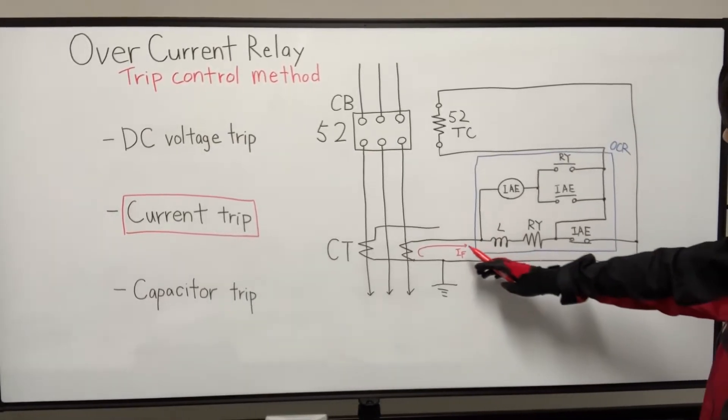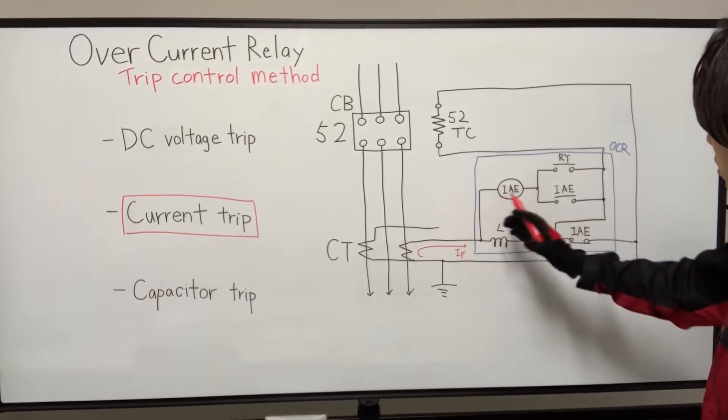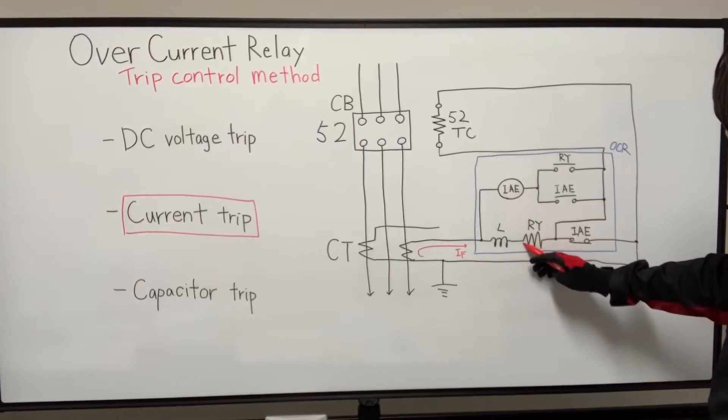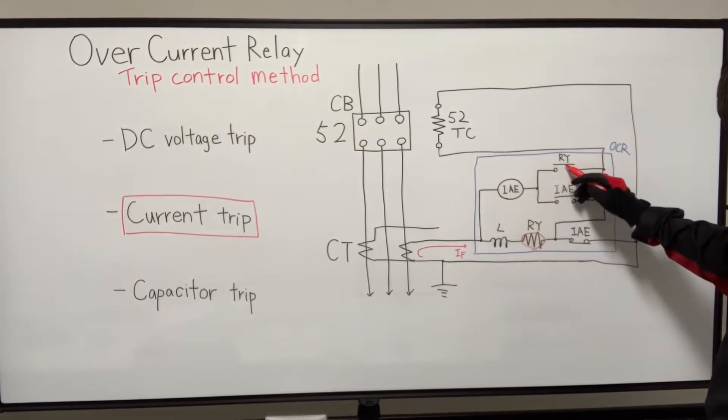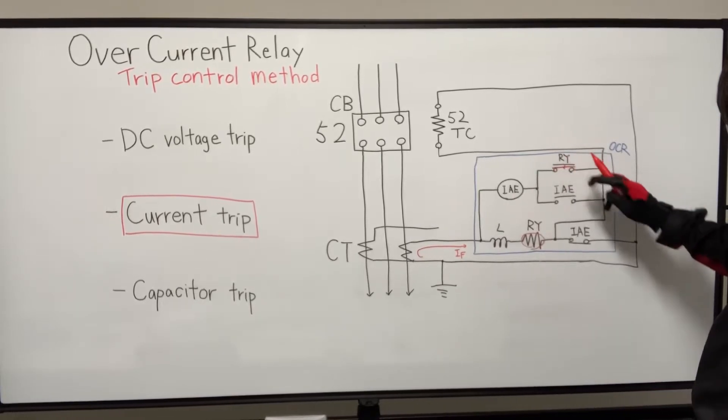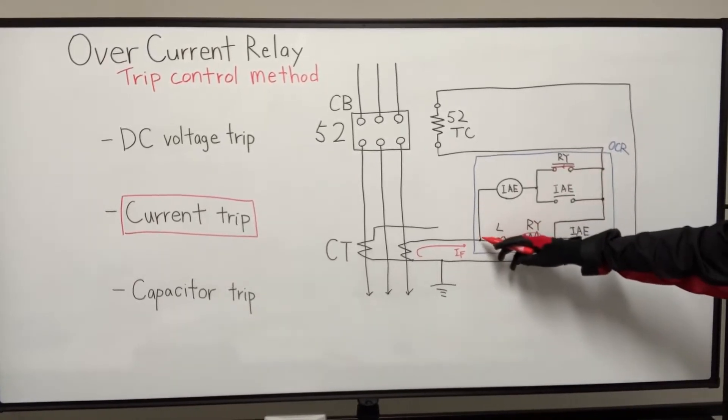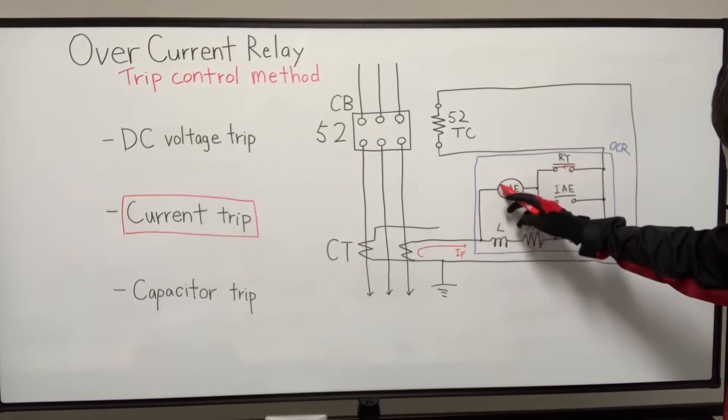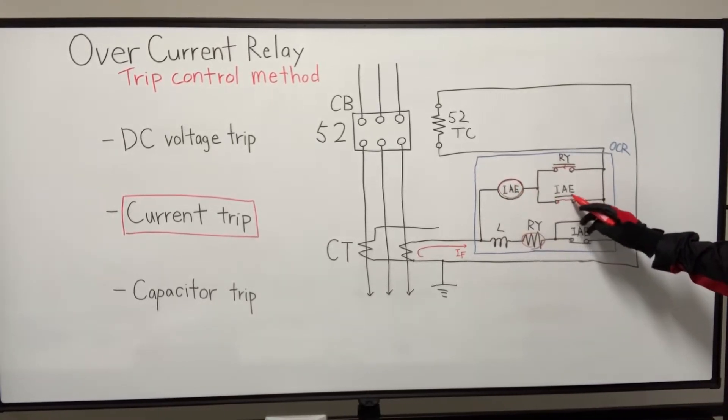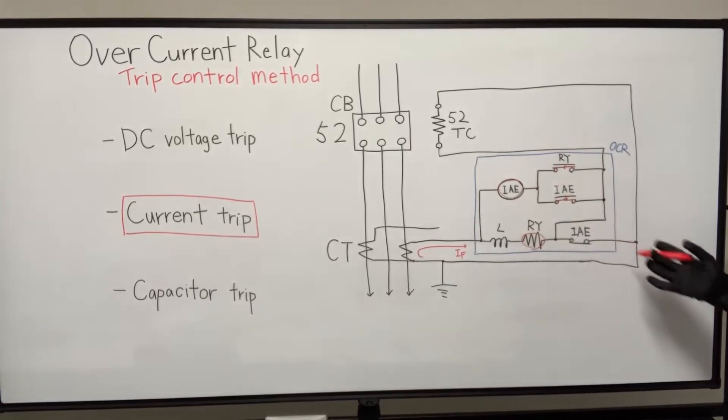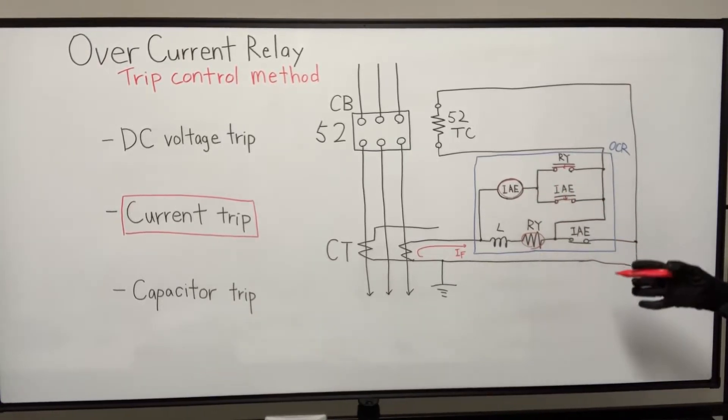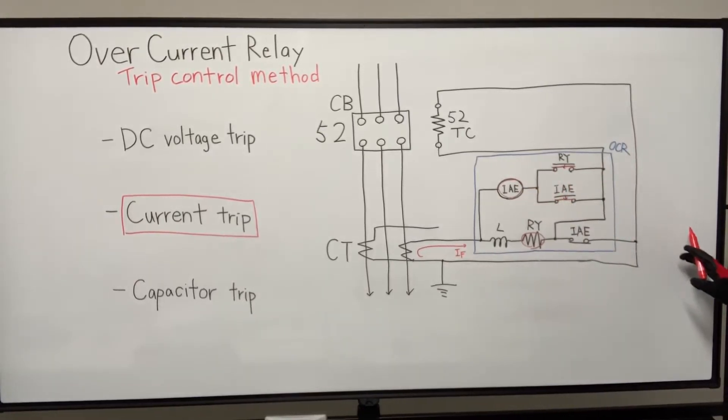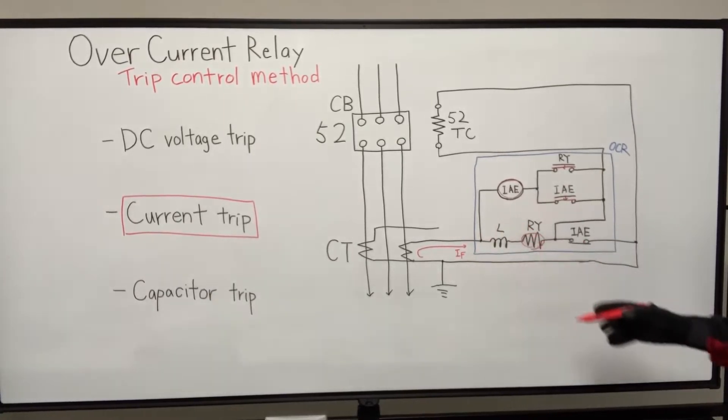And if this CT's secondary side current exceeds the relay's pickup value, the relay's coil is energized, and contact time to closed. And there's another loop here. It's made it. And also, the internal core is energized, and this contact also closed. Here, there are also, same as the last DC voltage trip. They are for self-holding the state after this IF has disappeared.